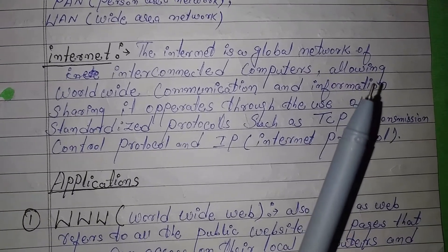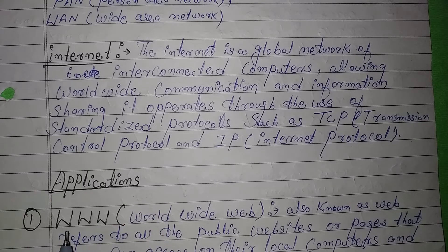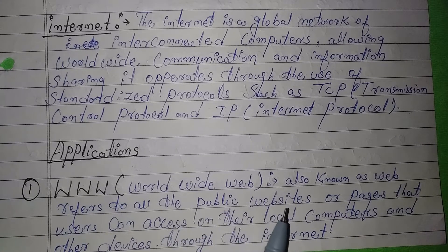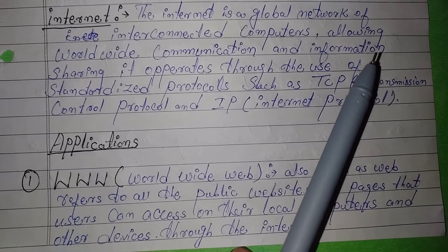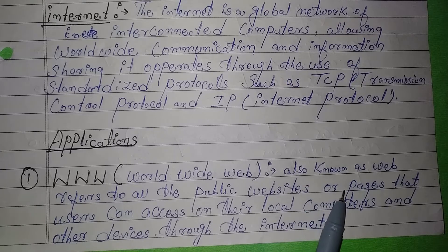Now there are applications of the internet. First is WWW, which stands for World Wide Web, also known as the Web. It refers to all the public websites or pages that users can access on their local computers and other devices through the internet.